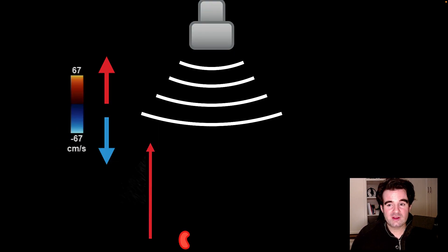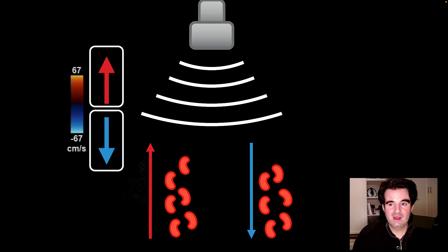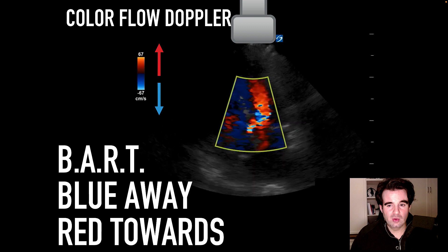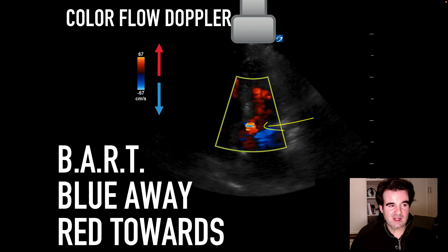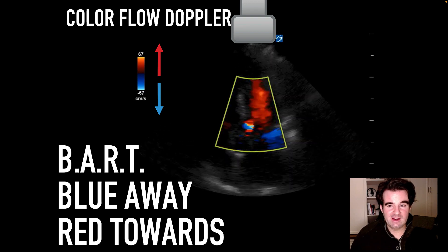When blood cells move towards the transducer, the sound is reflected with a higher frequency than the transmitted frequency, and this is registered as a red shift. Conversely, when blood cells are moving away from the transducer, the Doppler shift is negative — the reflected frequency is lower than the transmitted frequency. From this, the ultrasound machine can register velocity in centimeters per second and a vector direction. The acronym often used is BART: blue away and red towards. As you can see here, there's aortic regurgitation happening at the level of the aortic valve with blood flow towards the probe during diastole.